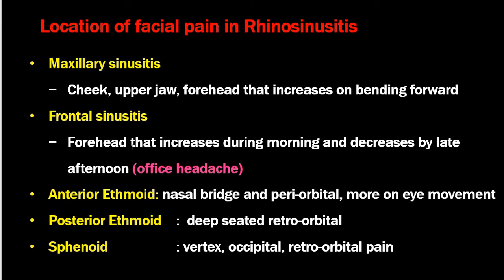In anterior ethmoidal sinusitis, there will be pain in the nasal bridge and periorbital area, more on eye movement. In posterior ethmoidal sinusitis, there will be deep-seated retro-orbital pain or headache. In sphenoidal sinusitis, there will be pain at the vertex, proximal area, and retro-orbital pain.